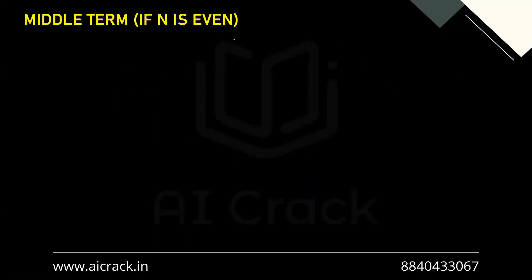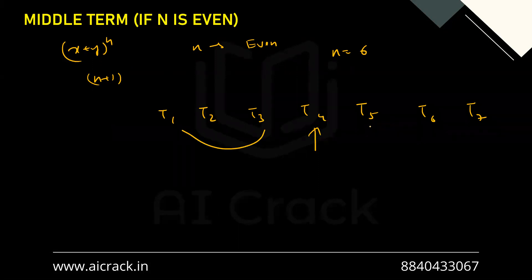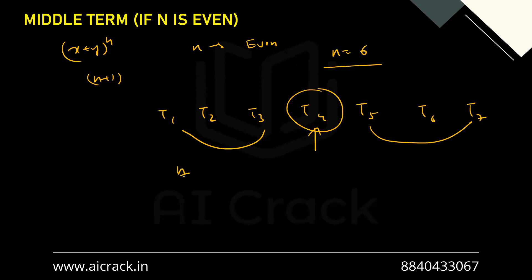Let us talk about the middle term when n is even. For the expansion (x + y)^n with n even, we have n+1 terms, which is odd. If n is 6, we get t1, t2, t3, t4, t5, t6, and t7. We can clearly see that the middle term is t4, with 3 terms on the left and 3 on the right. So the middle term is the (n/2 + 1)th term when n is even.